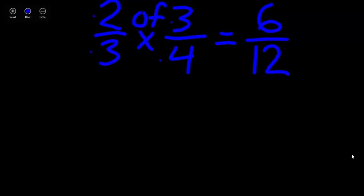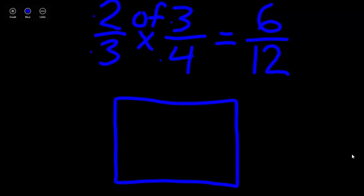Now, we found 2 thirds of 3 fourths. So to help understand why 2 thirds of 3 fourths in your answer will be smaller, we're going to use a brownie pan or a model to represent 2 thirds times 3 fourths.